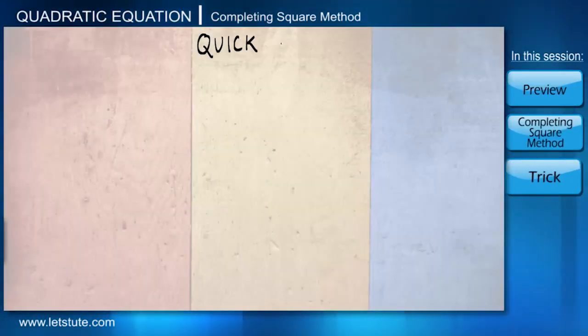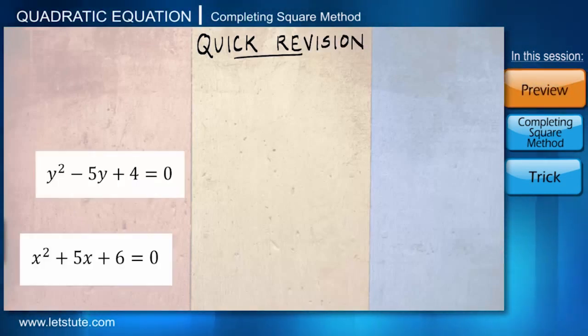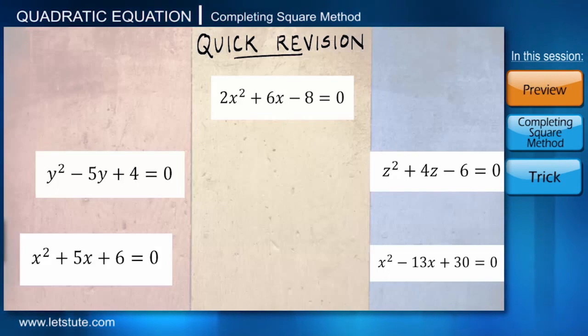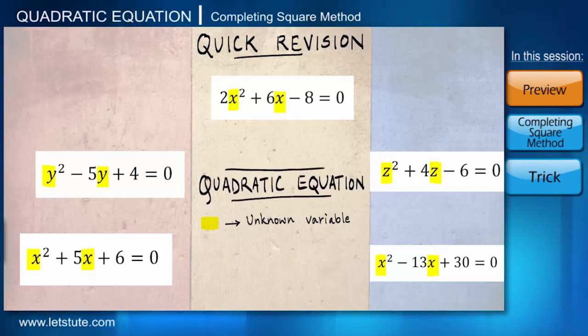Before we start with this session, let us quickly look into all that we know till this point. We learnt about equations that contain unknown variables, denoted by letters x, y, or z. We have seen these equations are named quadratic equations whenever the highest power of the variable is 2.